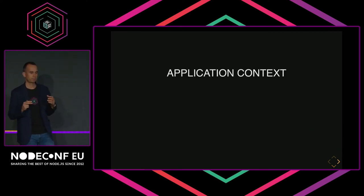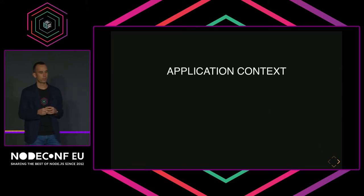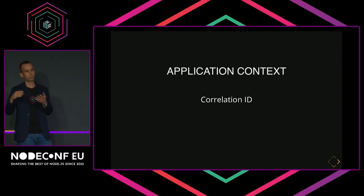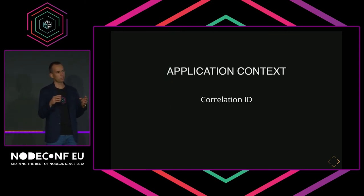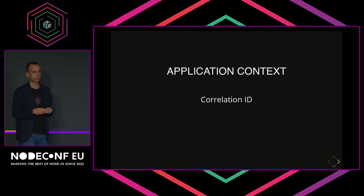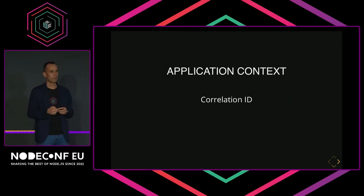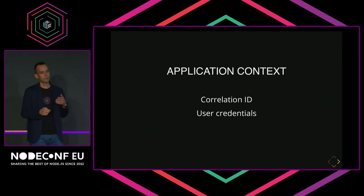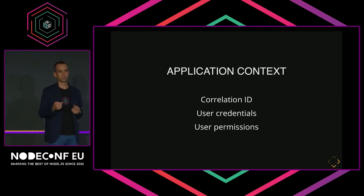For example, there is a group of values which I call application context. For example, correlation ID — this is a request header which you usually want to forward in your calls to backend microservices and print in your log lines, so that when you aggregate log lines from all different parts of your system, you can group together lines for the single request you are troubleshooting. There is also user authentication, the user credentials, which you might want to forward to your backend services. And then user permissions — what data is the user allowed to access — which you might want to apply when querying your database.